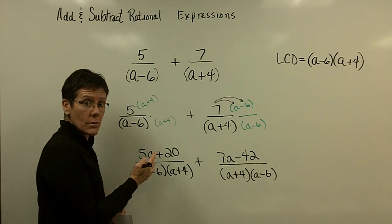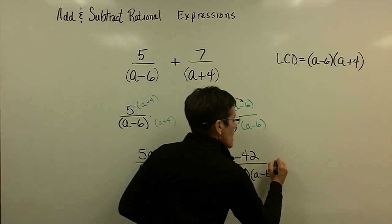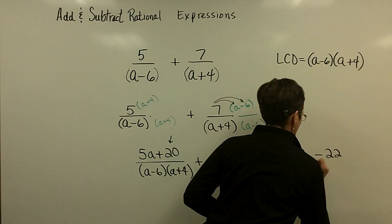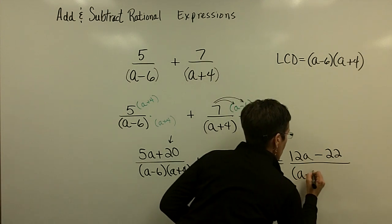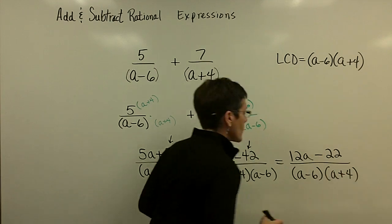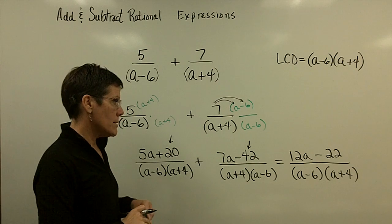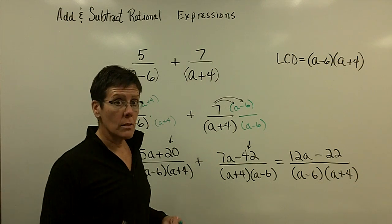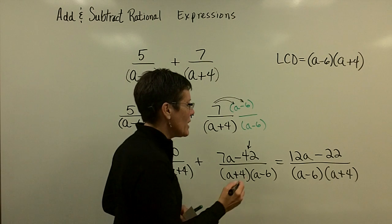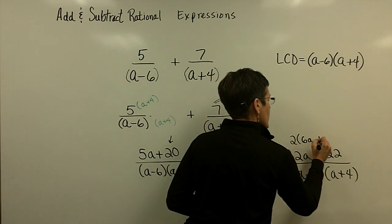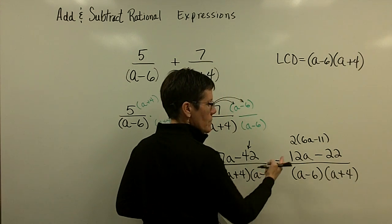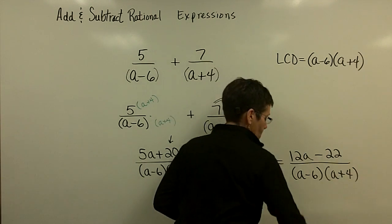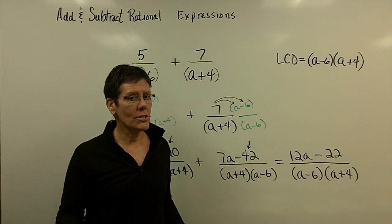Now add the numerators by combining like terms: 5a + 7a = 12a, and 20 + (−42) = −22. So the result is (12a − 22) over (a − 6)(a + 4). I pause and ask: if I factored a 2 out of the numerator, I'd get 2(6a − 11). Neither binomial in the denominator is (6a − 11) and there are no numerical factors of 2 downstairs, so it does not simplify. The answer stays as is.